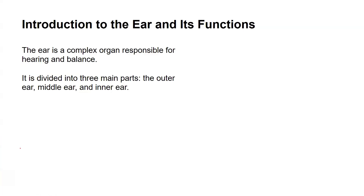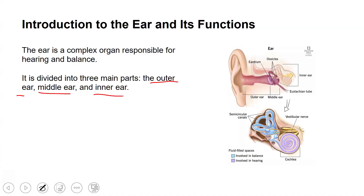So we have the outer ear, the middle ear, and the inner ear — these are the three major components of the ear. As we can see, this is the outer ear, this is the middle ear, and this is the inner ear. In the middle ear we have those small circles — those are the smallest bones found in humans.